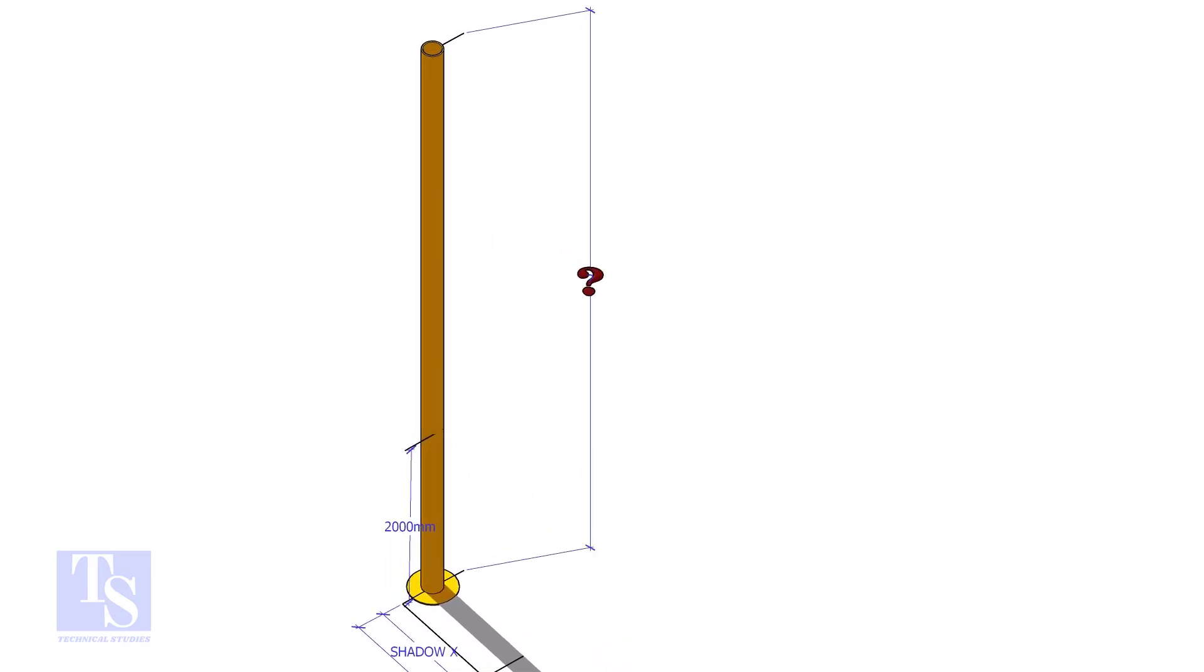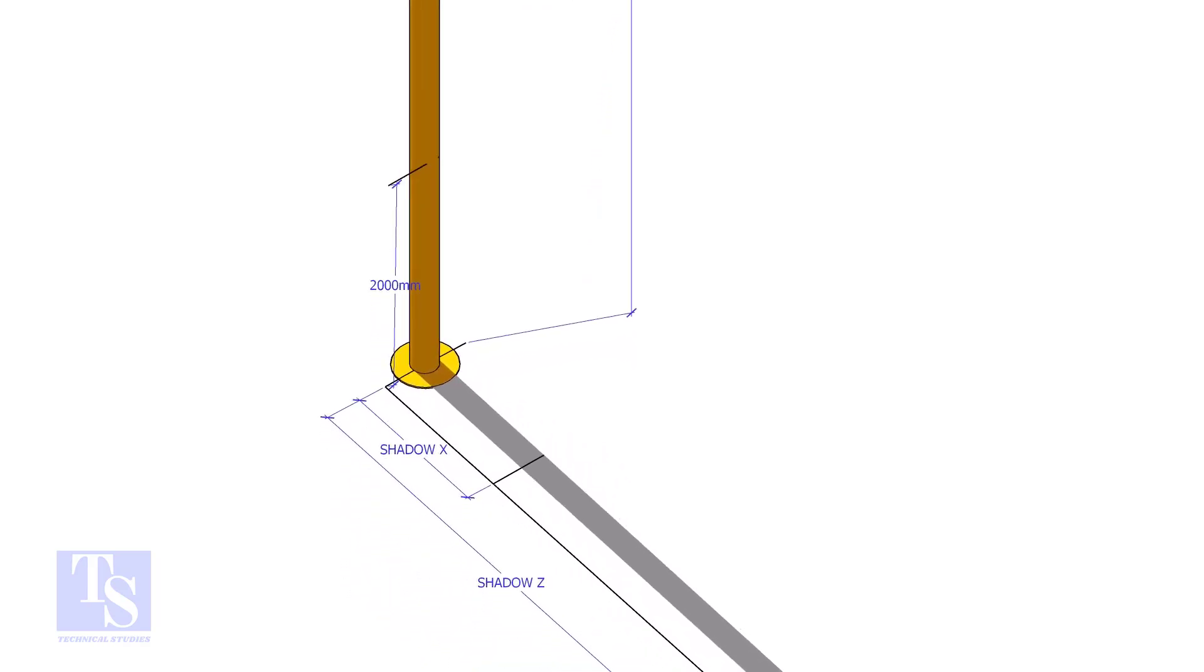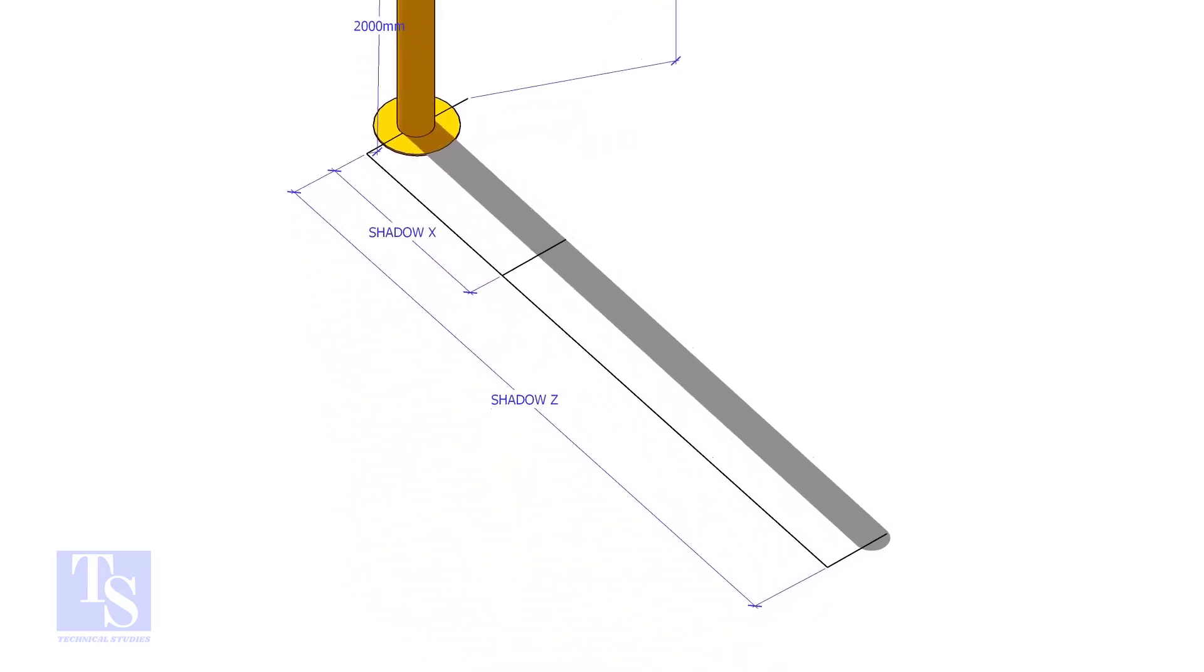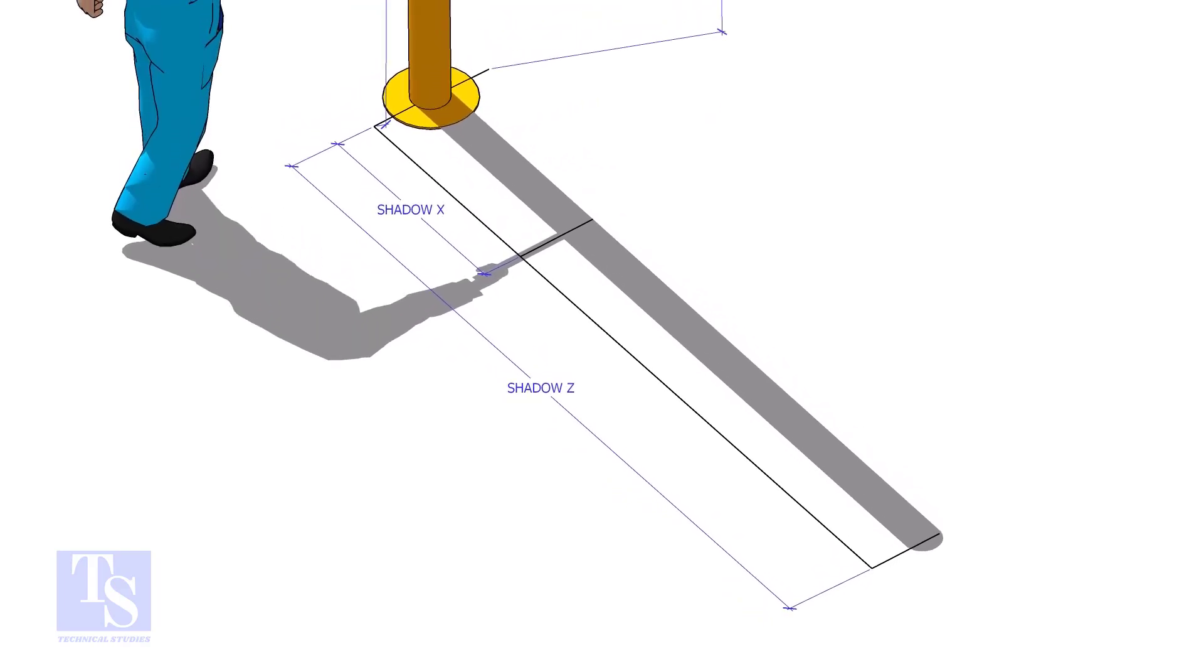First thing to do is to measure and note down the length of the shadow Z. Hold an object that can project a shadow at a convenient height on the pipe as shown. I chose 2m here.